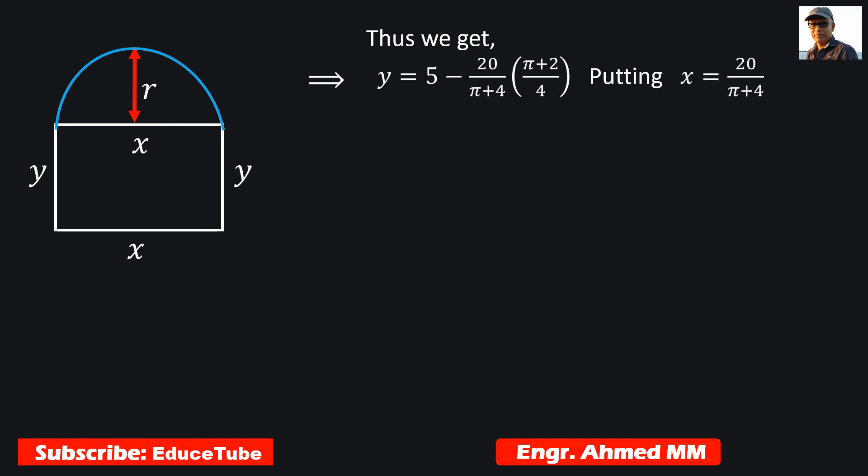We can find y equal to—this is the equation for y and here it was actually x. So we substituted this place with the value of this x. Now in the next step we can write this as this. So this is our result: y equal to 10 by pi plus 4. Already we know x equal to 20 by pi plus 4. So we got both.